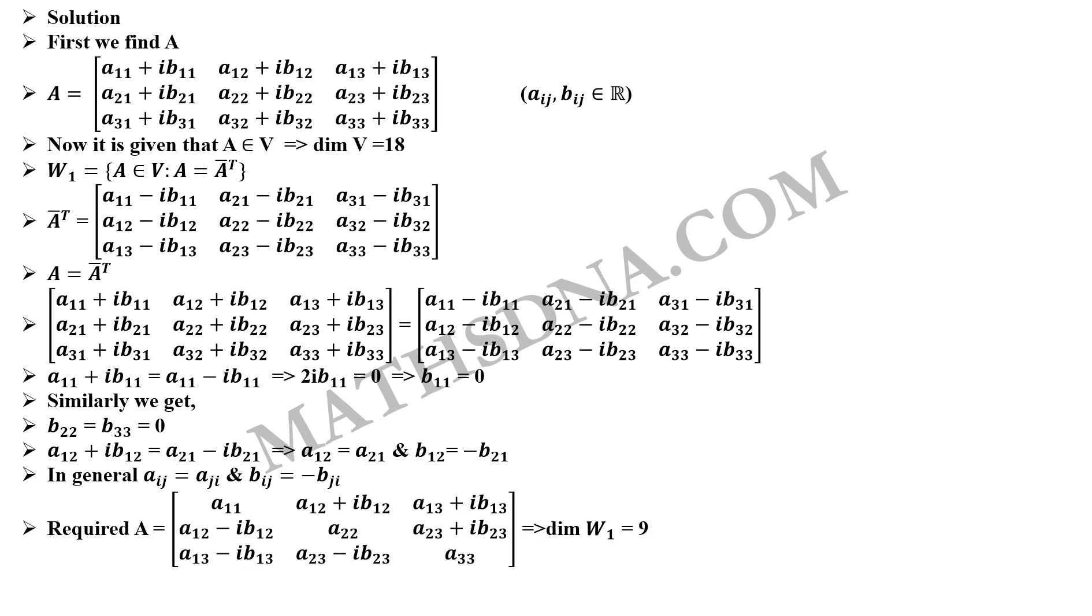This gives us our required A for W1 which has total 9 different entries. So, dimension of W1 equals to 9 or we can say 9 independent entries.